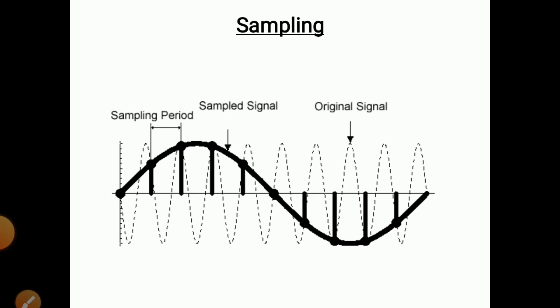First of all, what is sampling? Sampling means we have to sample the signal into different samples, small small samples. Suppose there is an original signal and we want to convert that original signal into the required form — at that time we have to convert that original signal into samples. So how can we do sampling? We have to take samples at different time intervals, and then we get the sampled signal.